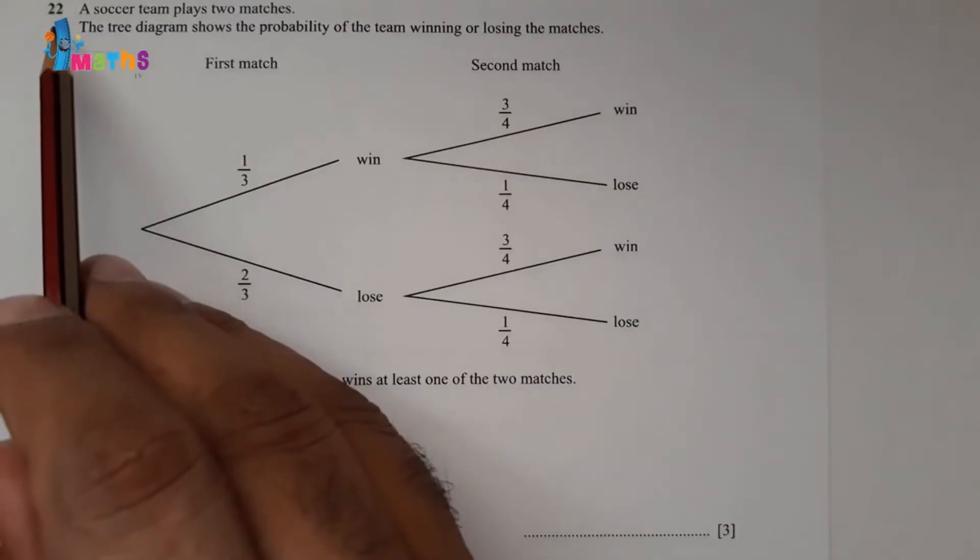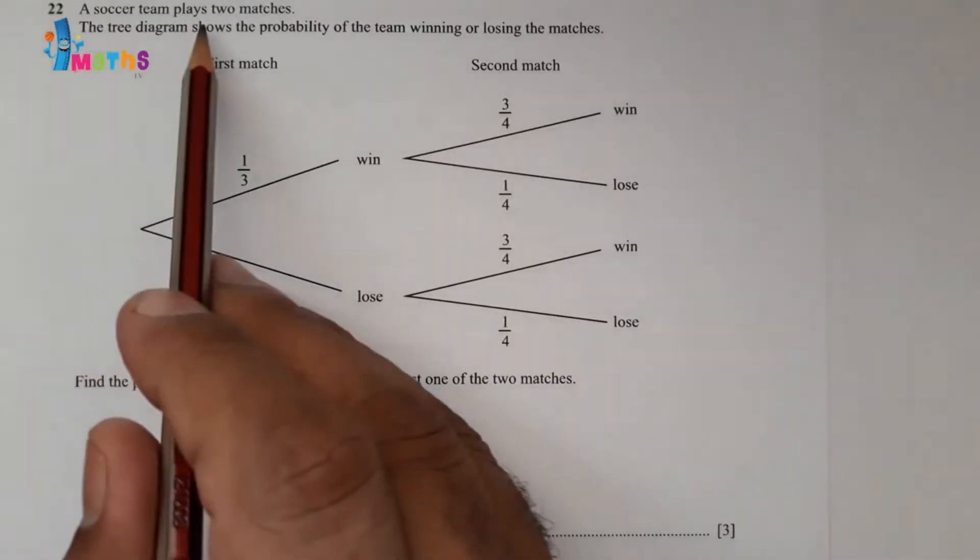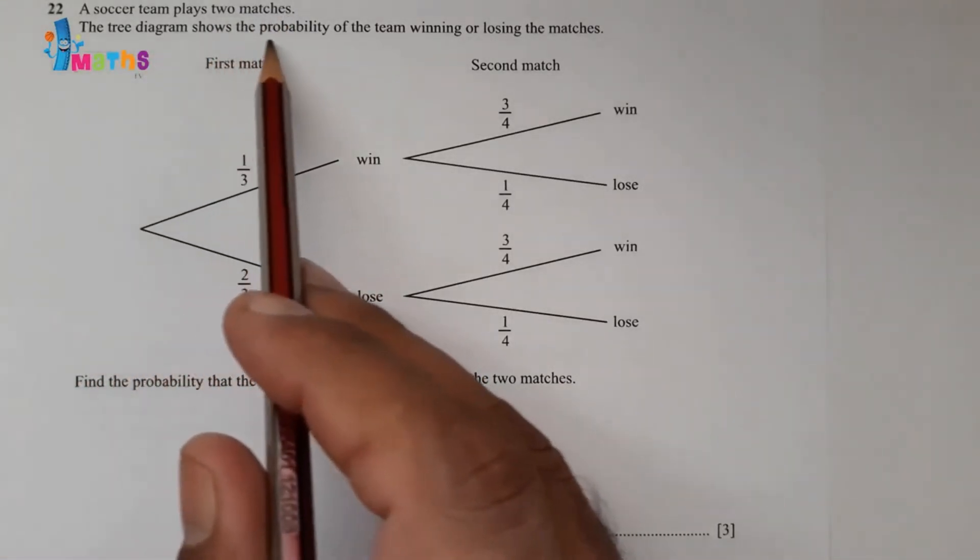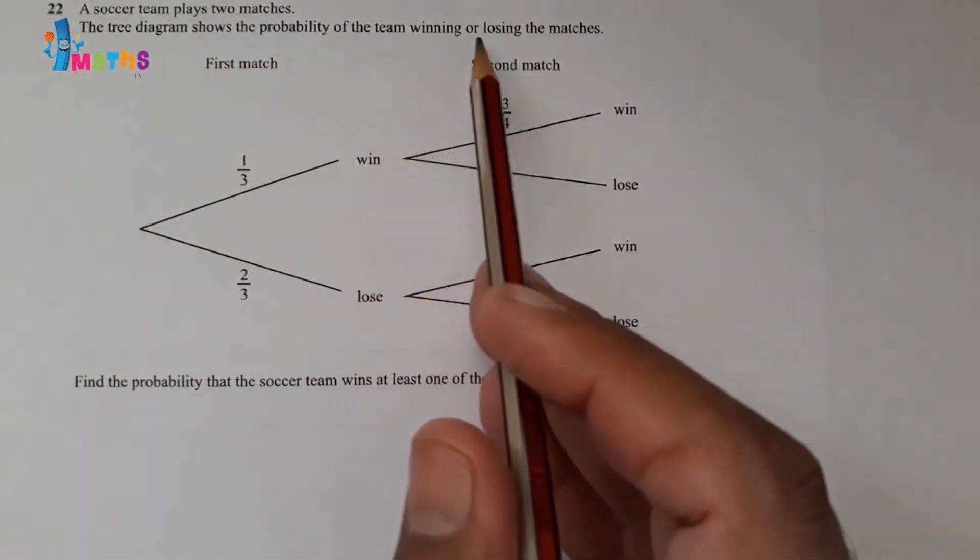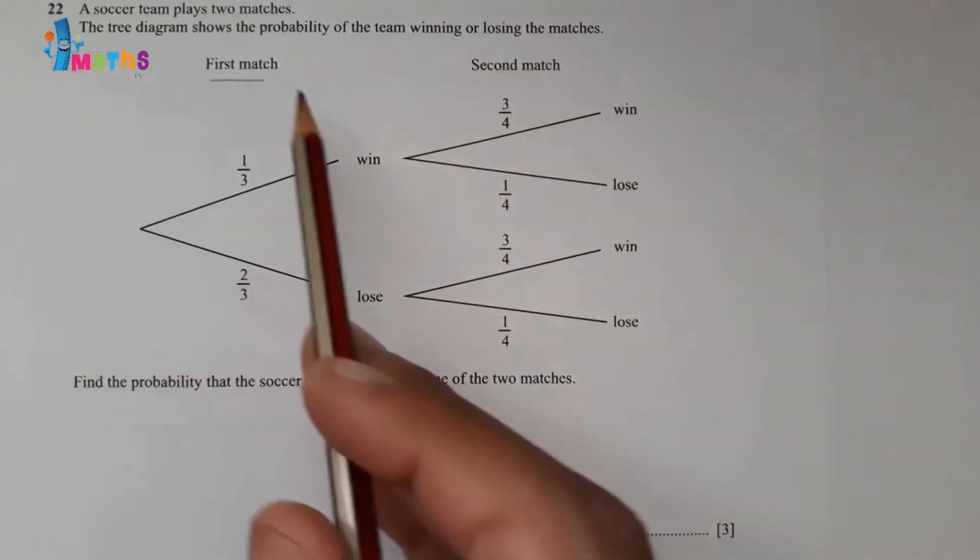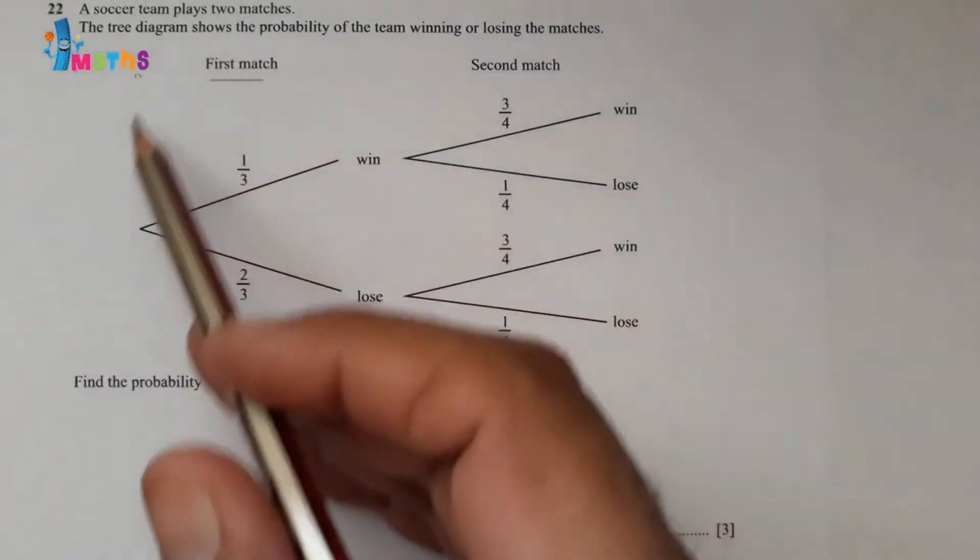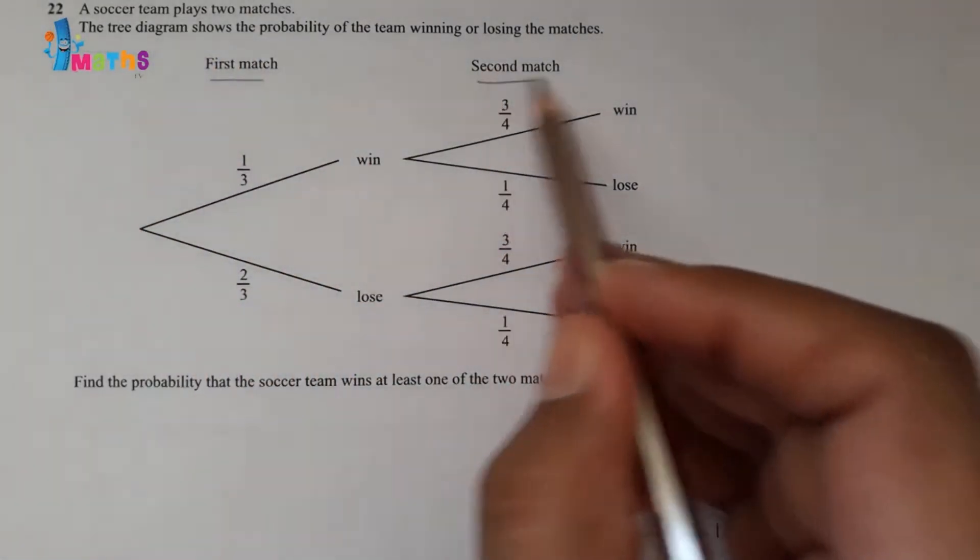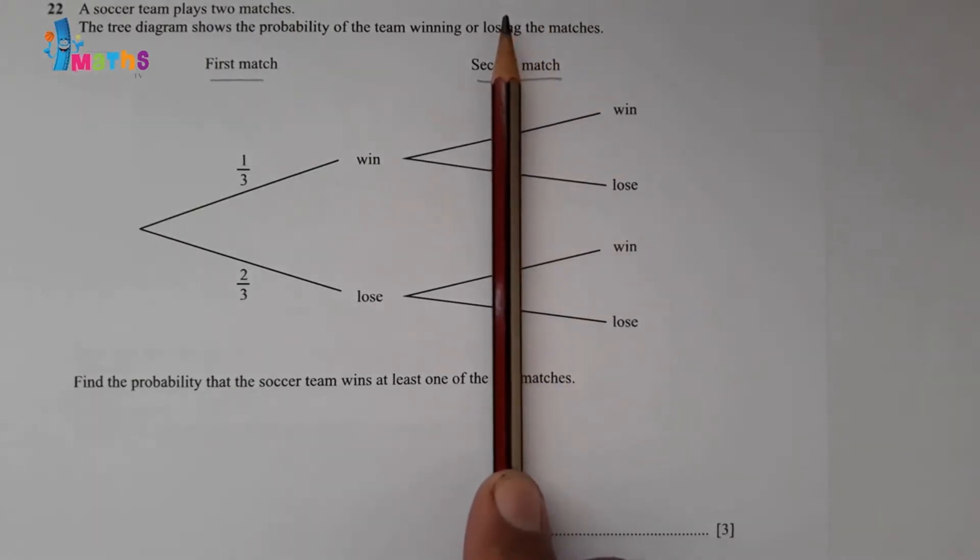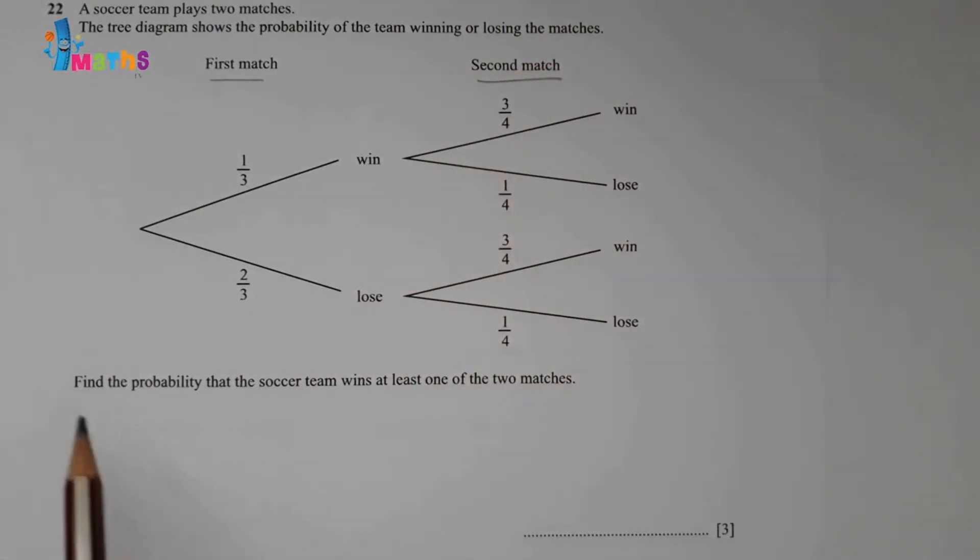Question number 22: a soccer team plays 2 matches. The tree diagram shows the probability of the team winning or losing the matches. This is the first match—you can take it as the first draw in probability—and this is the second match, which can be taken as the second option. So the first event will be this one, second event will be this one.